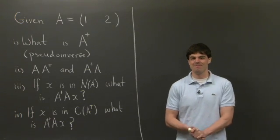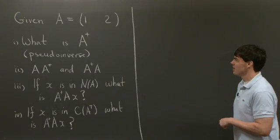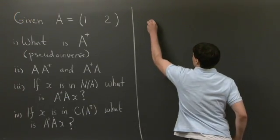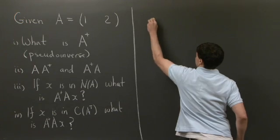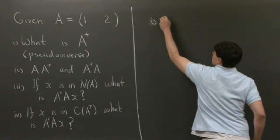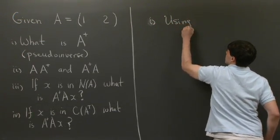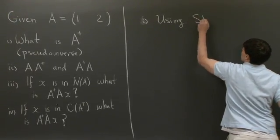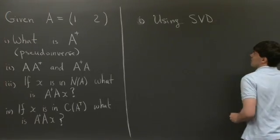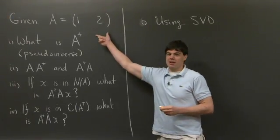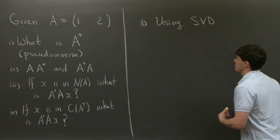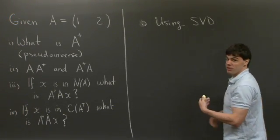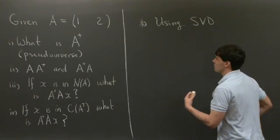Hi everyone, welcome back. Let's take a look at this problem. First off, what is a pseudo-inverse? We define the pseudo-inverse using the SVD — in actuality, this is nothing new. We note that because A is not square, the regular inverse of A doesn't necessarily exist. However, we do know that the SVD exists for every matrix A, whether it's square or not.